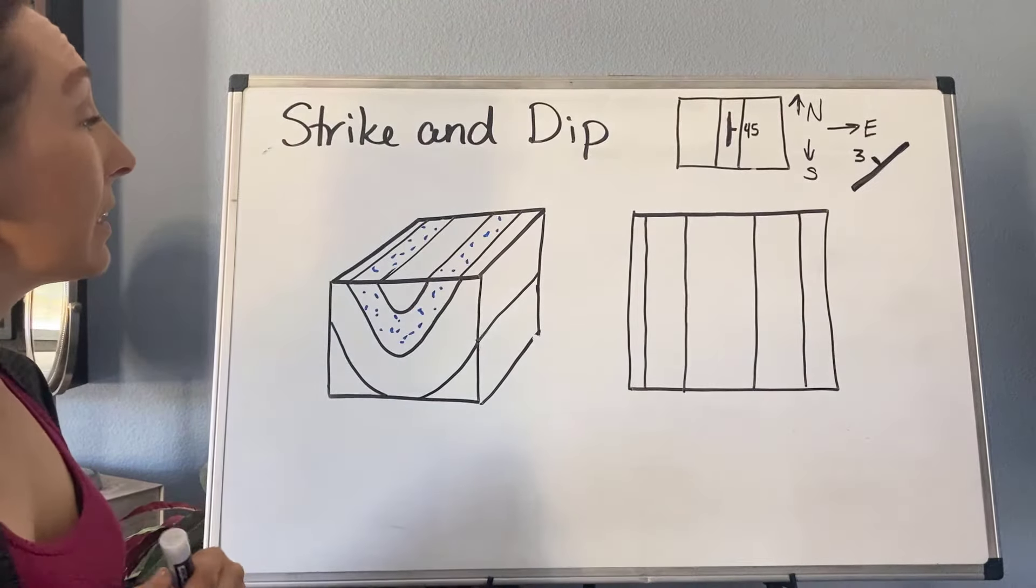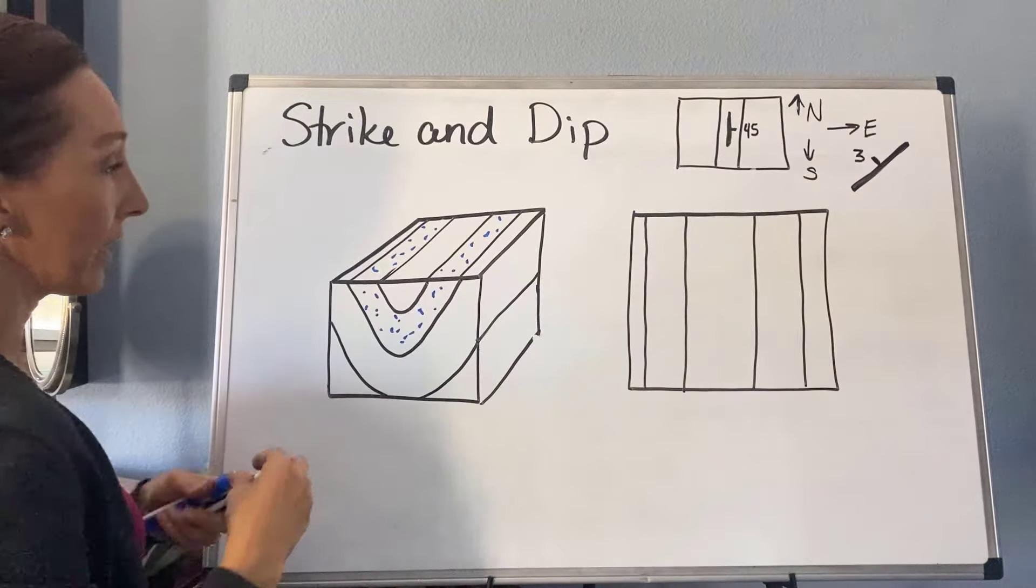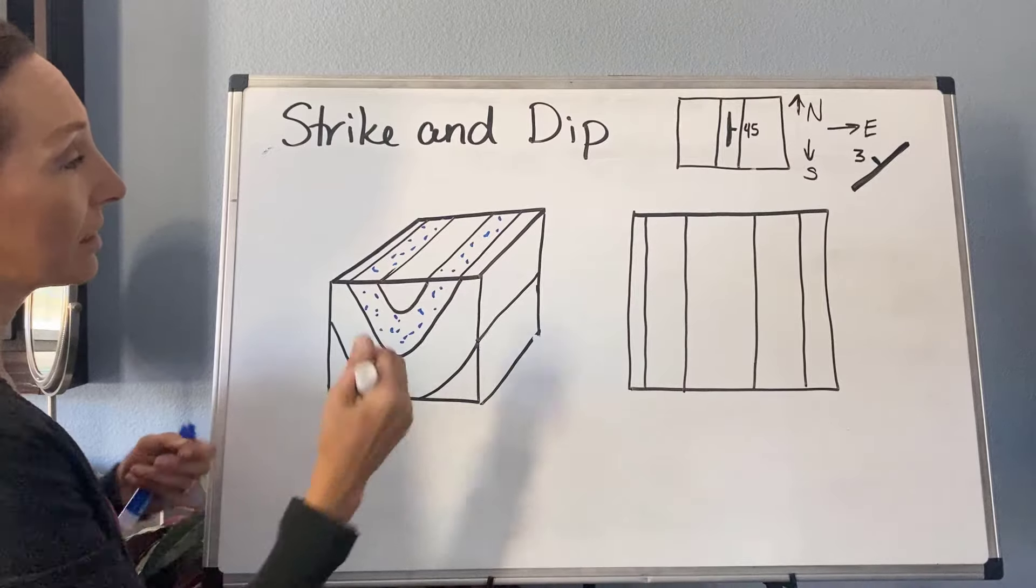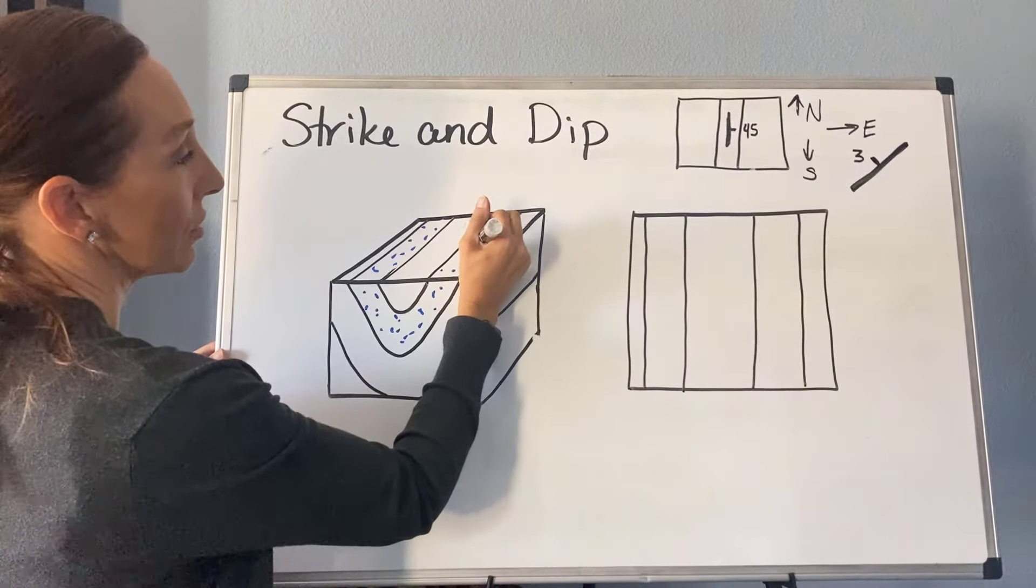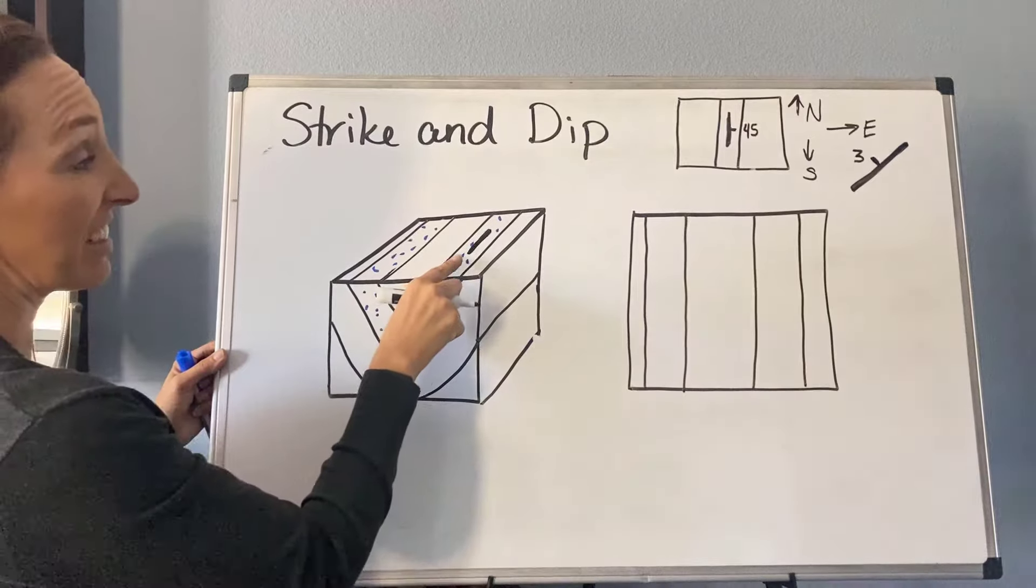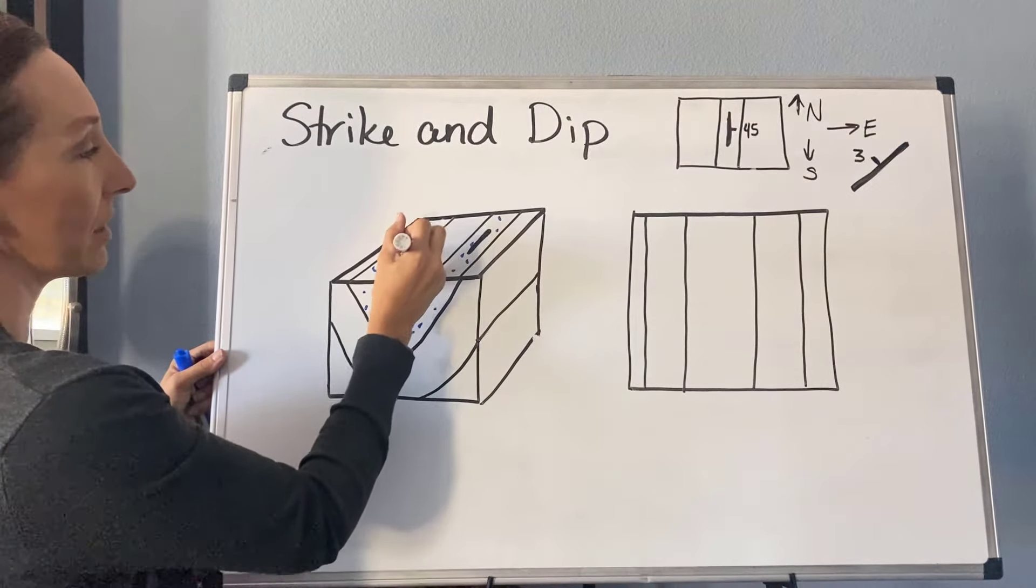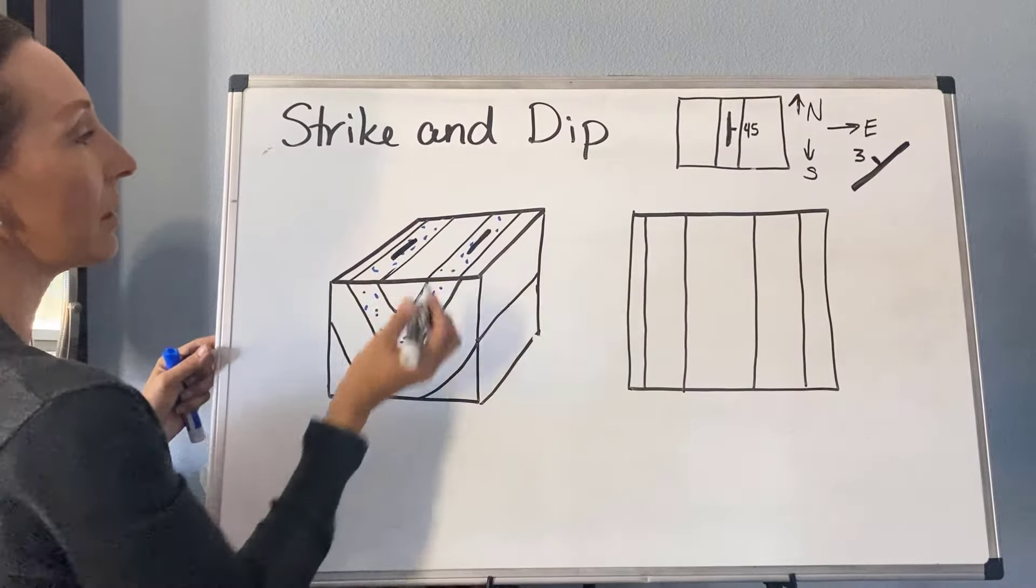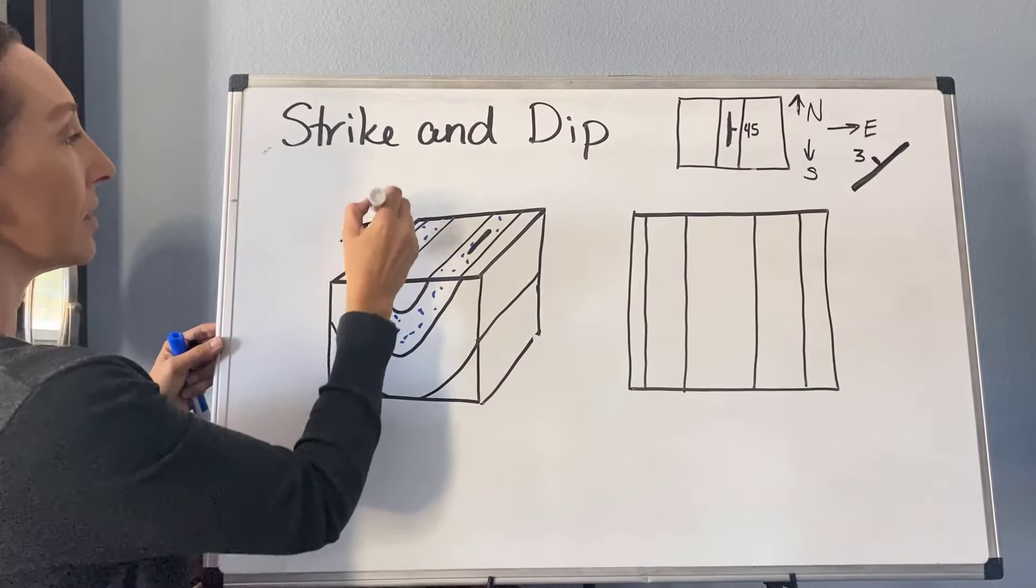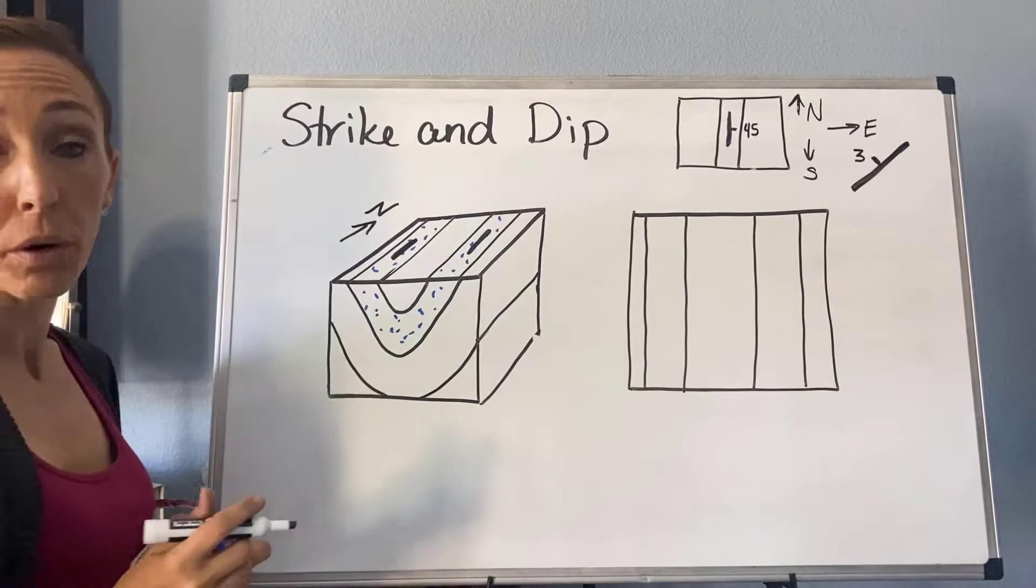And so we can see that on the right side of this map, it is striking in this direction here. This is the direction I'd have to travel if I wanted to stay on that bed, okay? And so same thing over here, it's striking in this direction here. Let's assume that this is north, so it's striking north-south.